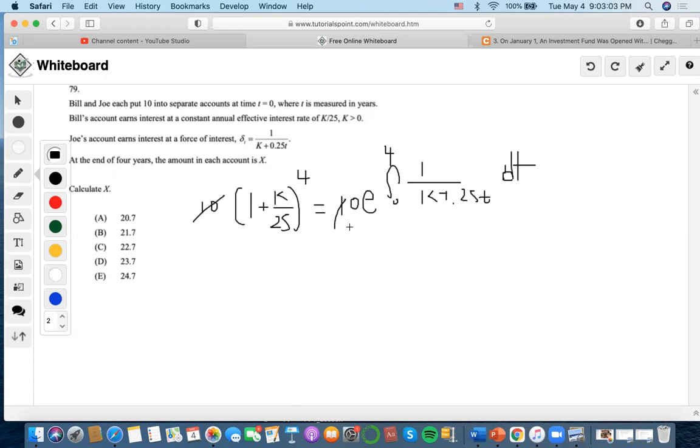Let's convert this into a logarithm so we can get rid of e. For Bill's account, we have 4 log(1 + K/25). For Joe's account, let's bring the whole thing down by putting a logarithm.